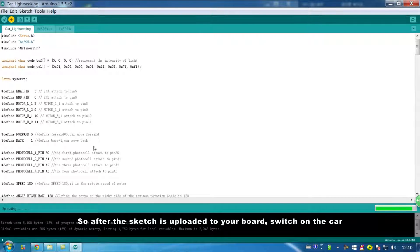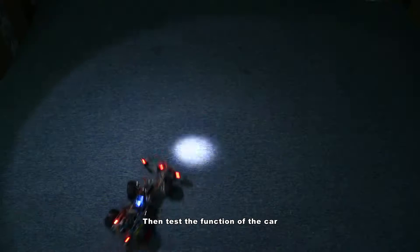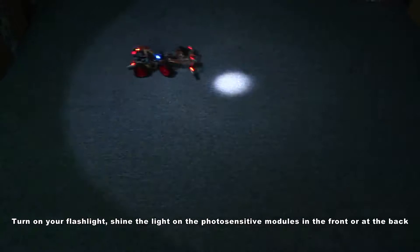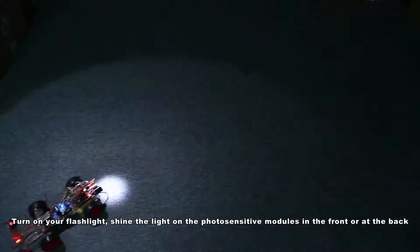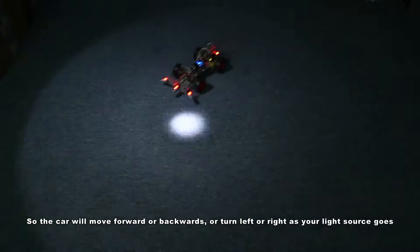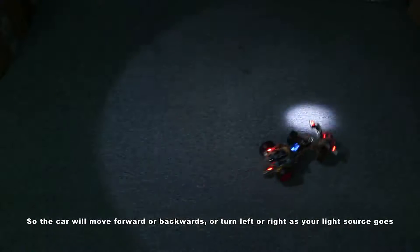So after the sketch is uploaded to your board, switch on the car, then test the function of the car. Turn on your flashlight, shine the light on the photosensitive modules in the front or at the back. So the car will move forward or backwards or turn left or right as your light source goes.